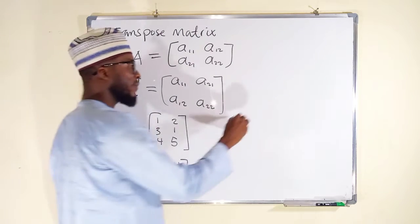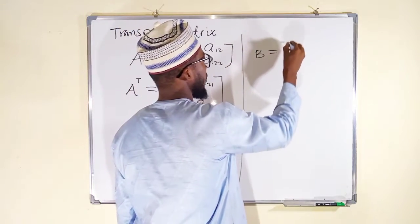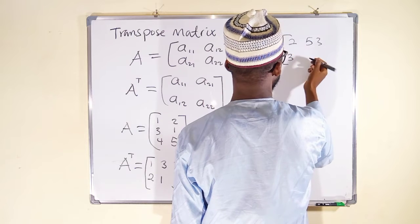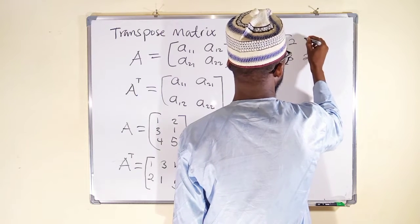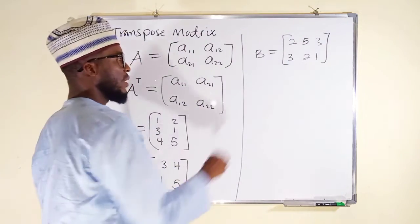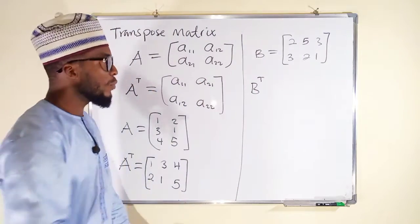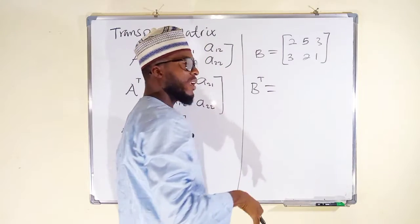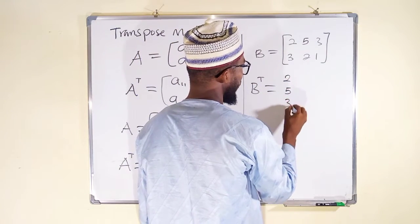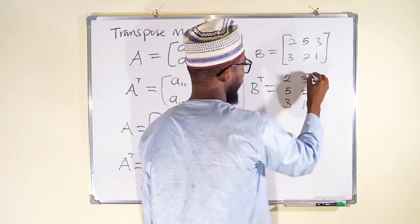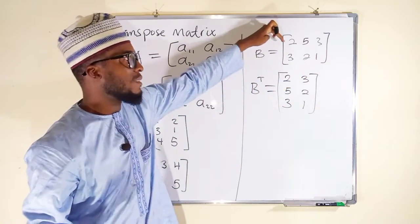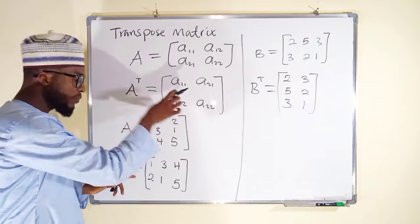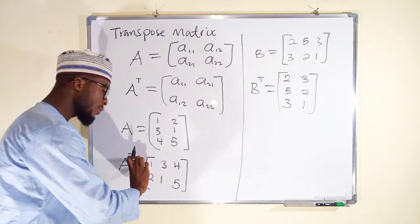Let us take another one. Suppose we have a matrix B with entries 2, 5, 3, 3, 2, 1. The transpose of matrix B is obtained by interchanging the rows and columns. The first row becomes the first column: 2, 5, 3. The second row becomes the second column: 3, 2, 1. You can see this matrix was a 2 by 3 matrix, but the transpose becomes a 3 by 2 matrix.